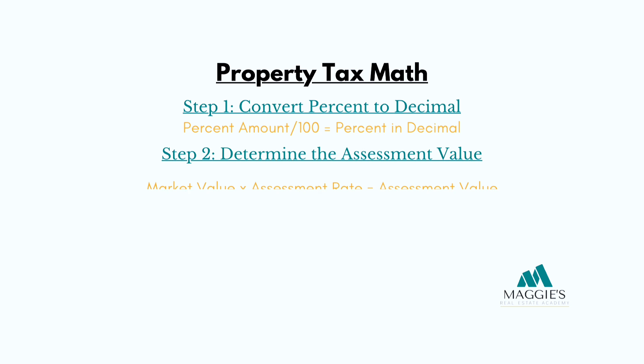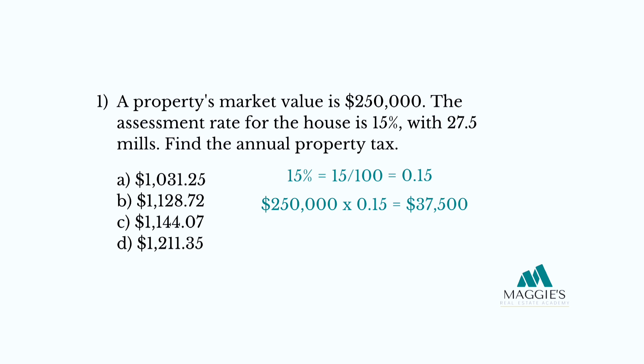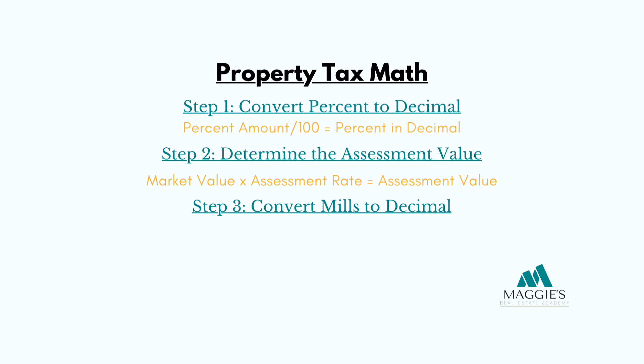Step 2: determine the assessment value. We need to find the assessment value of the property. Simply multiply the market value by the assessment rate. Market value of $250,000 times the assessment rate of 15% (or 0.15) equals $37,500. So the assessment value is $37,500.